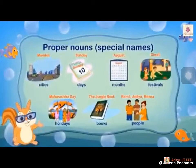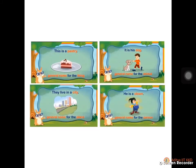We are learning the subdivisions of nouns in a detailed manner. Let us go through common noun examples: 'This is a pastry' — we did not mention what kind of cake it is. 'It is his dog' — we did not specify. 'They live in a city' — we do not know the name of that city. 'He is a clown' — a general name for a person who tries to amuse others. So pastry, dog, city, clown — these are all examples of common nouns.